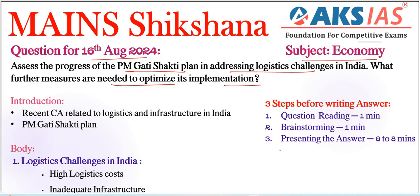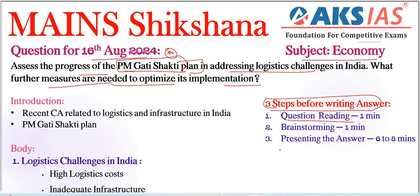We need to follow our three steps before writing the answer. The first important step is question reading. Within one minute we need to identify different parts, question tags, and keywords. Here, the topic is PM Gati Shakti plan — a very, very important topic. There are two parts: assess the progress of the scheme, and what are the important measures needed to optimize its implementation.